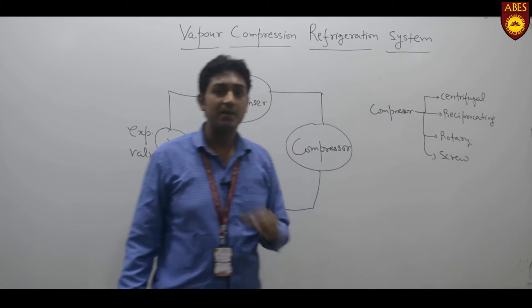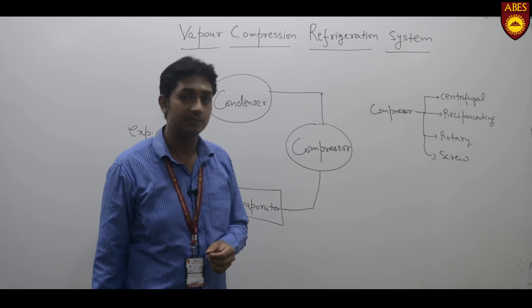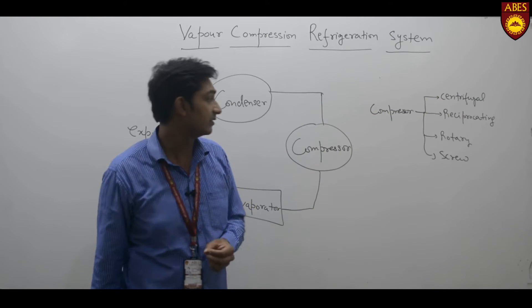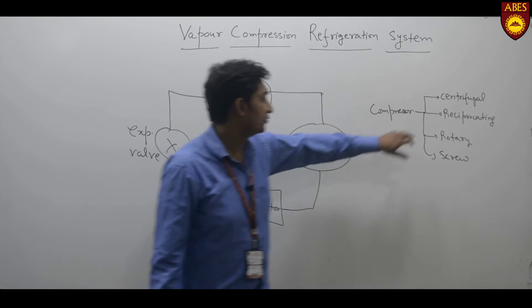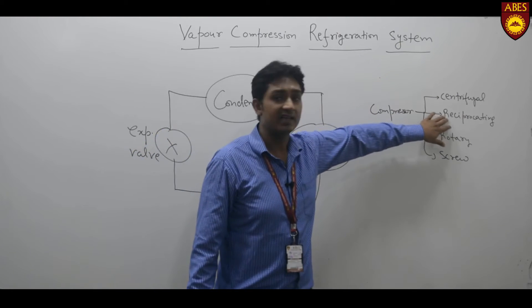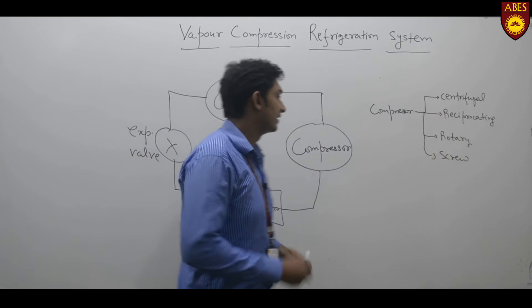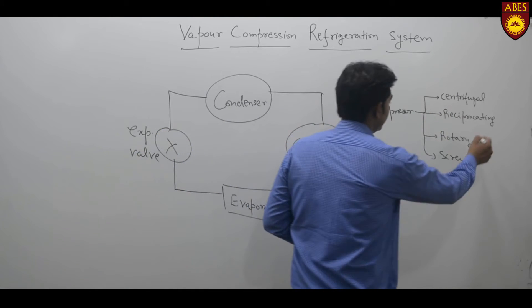In home appliances like refrigerators and air conditioners used in buildings and homes, we use the reciprocating type of compressor, which can be further classified.